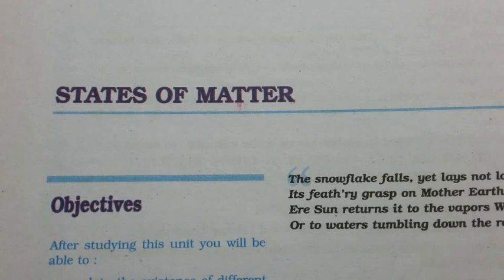Coefficient of viscosity is a measure of viscosity. The SI unit of viscosity coefficient is 1 N s m⁻². In the CGS system, the unit of coefficient of viscosity is poise (P), named after the great scientist Jean-Louis Poiseuille. 1 poise = 1 g cm⁻¹ s⁻¹ = 10⁻¹ kg m⁻¹ s⁻¹. Greater the viscosity, the more slowly the liquid flows. Hydrogen bonding and van der Waals forces that are strong enough cause high viscosity.